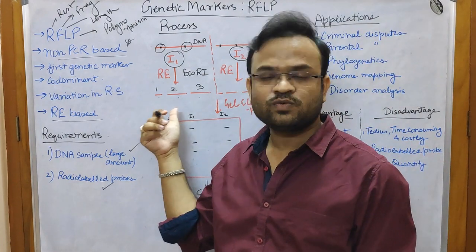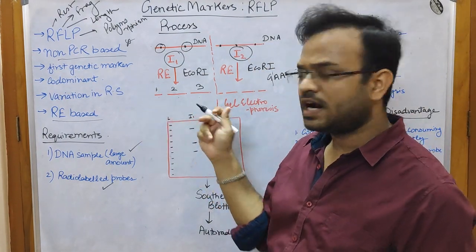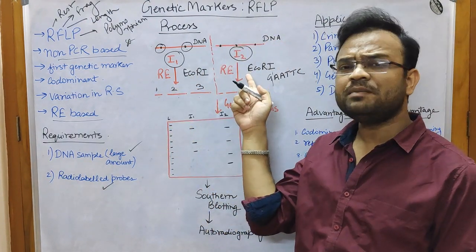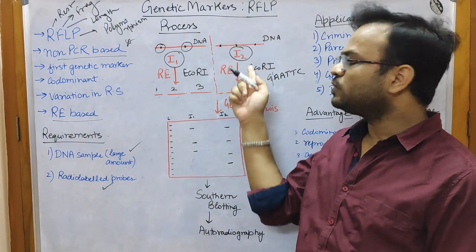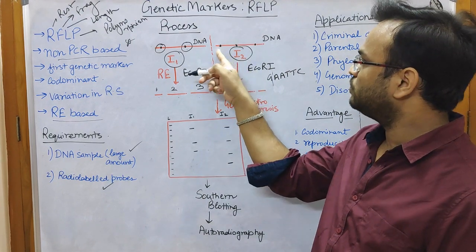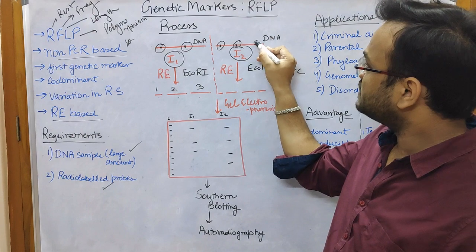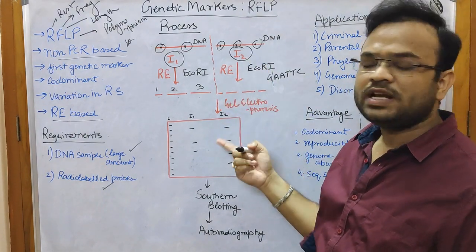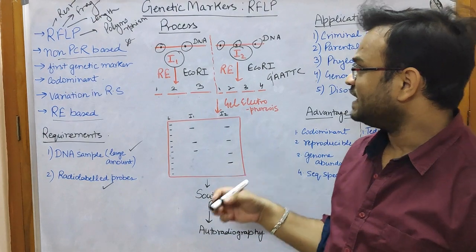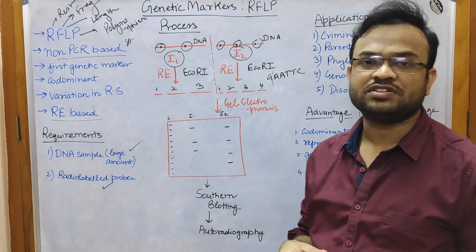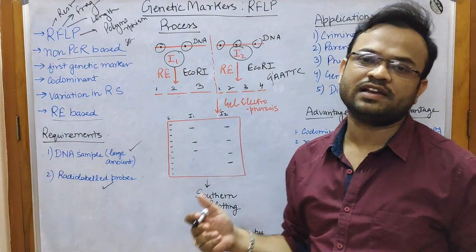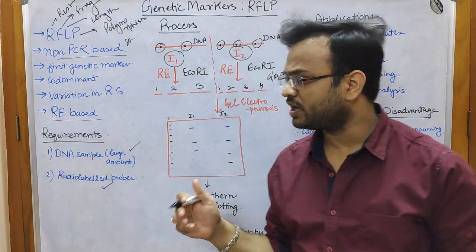So in Individual 1, cutting at two restriction sites gives three fragments. In Individual 2, when we use EcoR1, we find three restriction sites, and after cutting we get four fragments. These four fragments are entirely different in length compared to those from Individual 1.